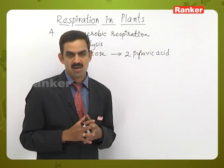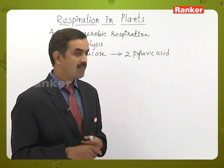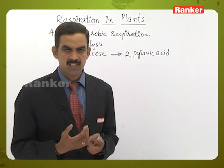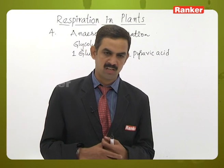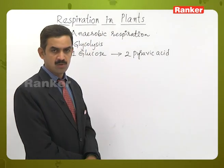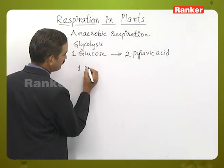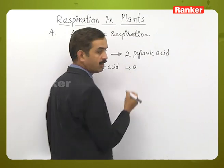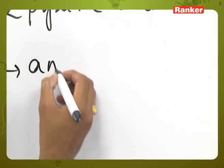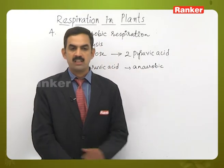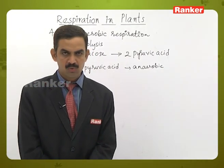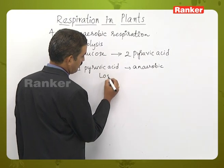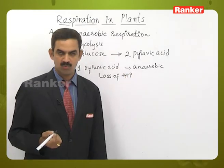If it is a prokaryotic organism like bacteria, mitochondria are absent, so the continuation after glycolysis occurs in the cytoplasm — this is the fermentation process, which may be alcohol fermentation, lactic acid fermentation, or acetic acid fermentation. In the question, only one pyruvic acid molecule is considered. One pyruvic acid will participate in anaerobic fermentation, and the question is whether there is a gain or loss of ATP. Actually, there is a loss of ATP.